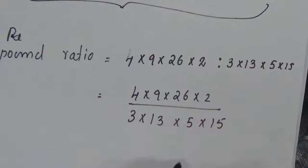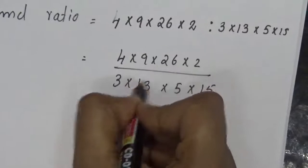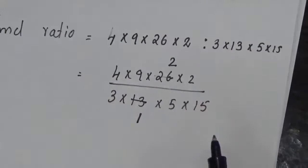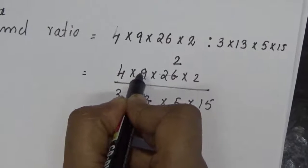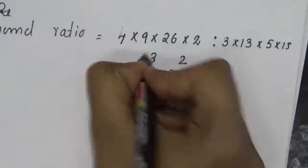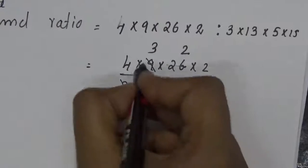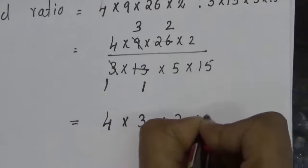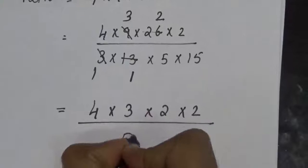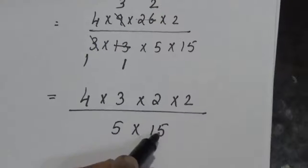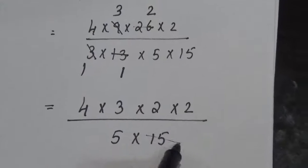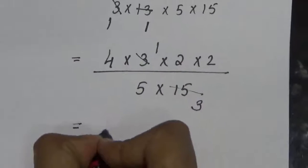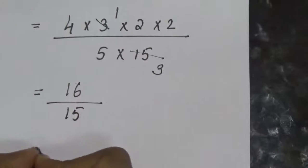So the compound ratio is 4 × 9 × 26 × 2 divided by 3 × 13 × 5 × 50. We can simplify: 26 divided by 13 gives 2 and 1; 9 divided by 3 gives 3 and 1. Now the numerator is 4 × 3 × 2 × 2. Then 3 and 15 — since 15 is a multiple of 3 — divide to give 1 and 5. So we get 4 × 2 × 2 equals 16, over 5 × 50. Therefore the compound ratio is 16 is to 50.